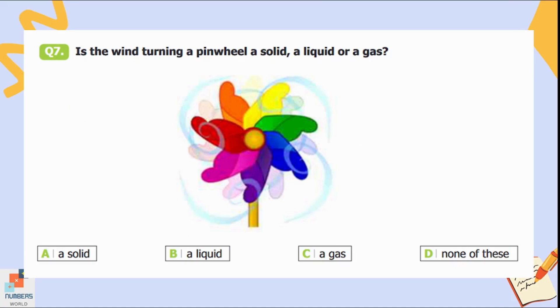Question number seven: Is the wind turning a pinwheel a solid, a liquid, or a gas? Option A is a solid, B is a liquid, C is a gas, and D is none of these. It's quite obvious that wind is a gas. Option C is the correct answer.